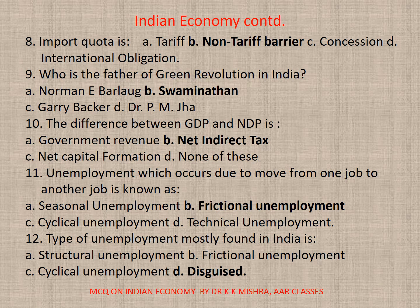Question 11: Unemployment which occurs due to moving from one job to another job is known as A. Seasonal Unemployment, B. Frictional Unemployment, C. Cyclical Unemployment, or D. Technical Unemployment. Correct option is B. Frictional Unemployment. Question 12: Type of unemployment mostly found in India is A. Structural, B. Frictional, C. Cyclical, or D. Disguise. Correct option is D. Disguise.